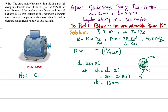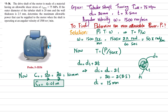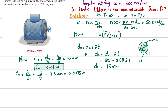Next, we find the outer radius c_o = d_o / 2 = 20 / 2 = 10 mm = 0.01 m. The inner radius c_i = d_i / 2 = 15 / 2 = 7.5 mm = 0.0075 m.